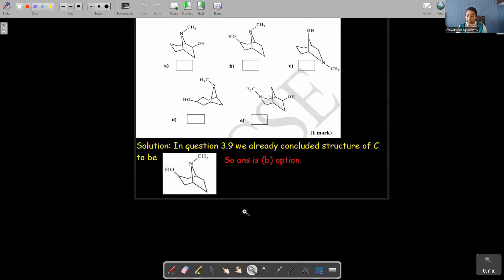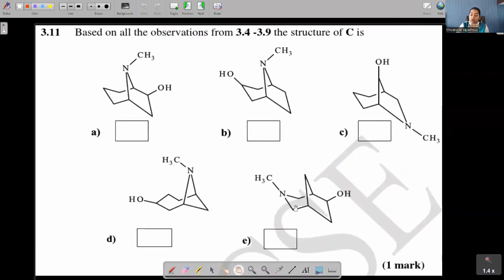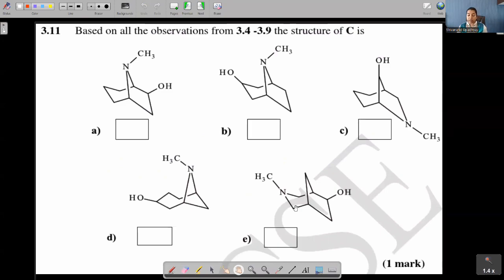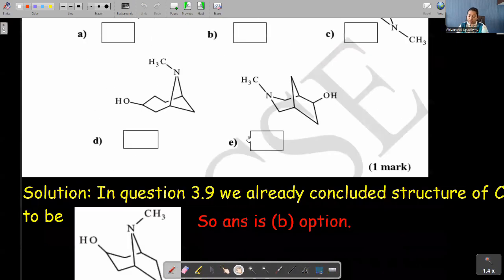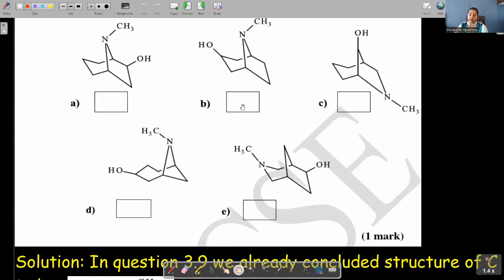Moving to question number 3.11. Now 3.11 it says, based on all the above observations from 3.4 to 3.9, the structure of C is. I think we have already estimated in question 3.9 itself that the structure of C is this particular structure. So by this logic, the option B is our answer. The correct answer will be option B.